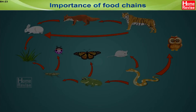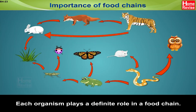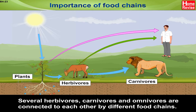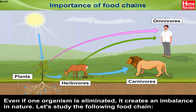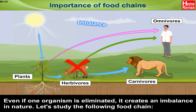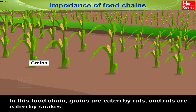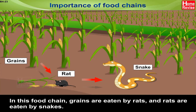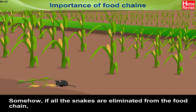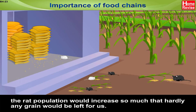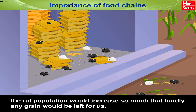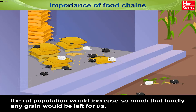Importance of Food Chains. Each organism plays a definite role in a food chain. Several herbivores, carnivores and omnivores are connected to each other by different food chains. Even if one organism is eliminated, it creates an imbalance in nature. For example, in the chain where grains are eaten by rats and rats are eaten by snakes — if all the snakes are eliminated, the rat population would increase so much that hardly any grain would be left for us.